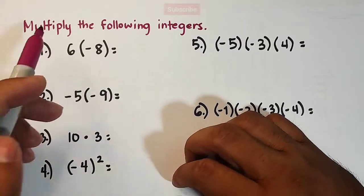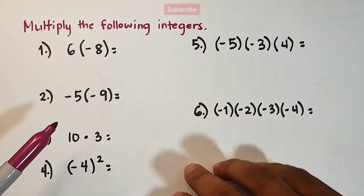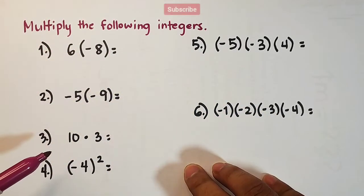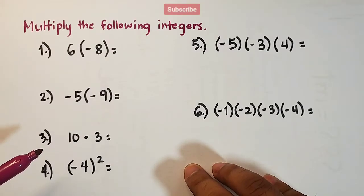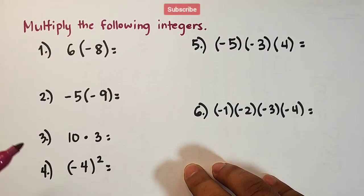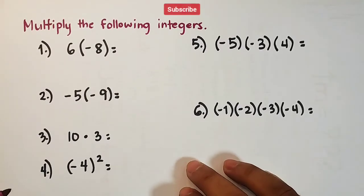So here's the direction. Multiply the following integers. So I have here six different examples, and later on, I will give you one example, or one item, for your activity. So what is the rule in multiplying integers?